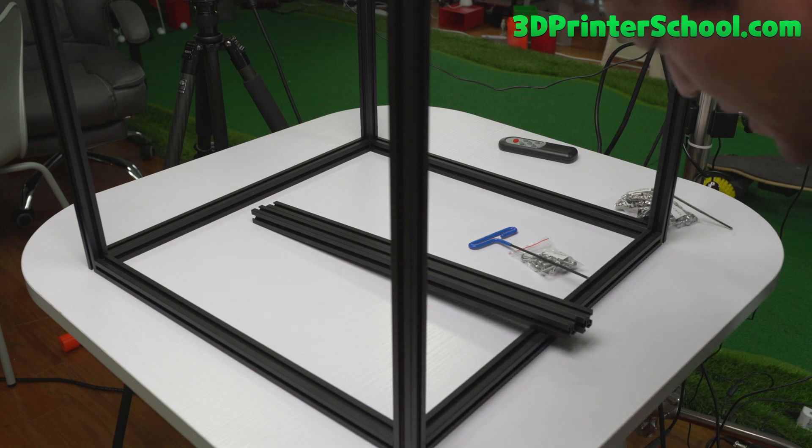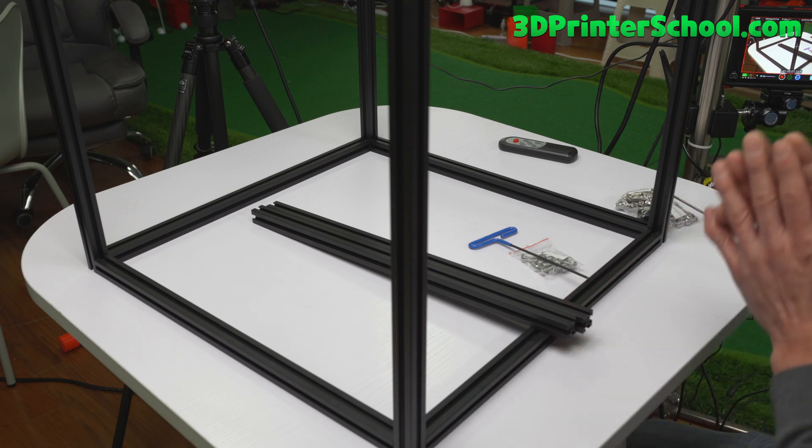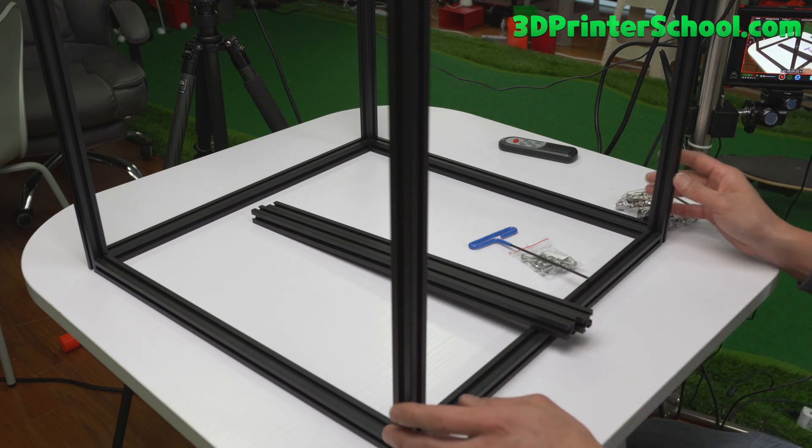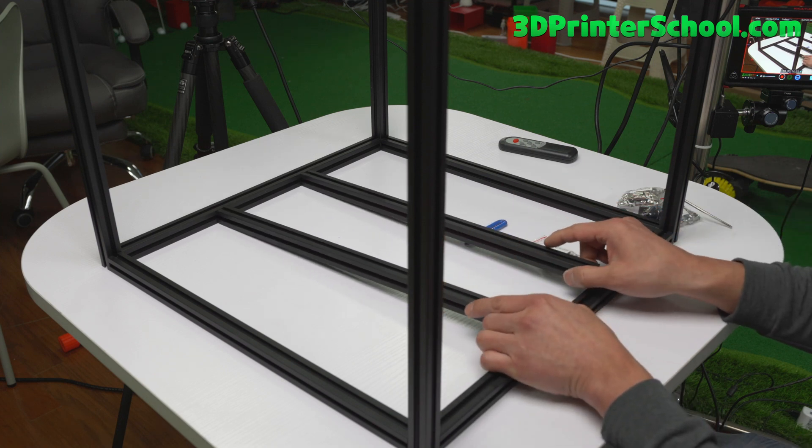Hi guys, welcome to 3dprinterschool.com. For this step 2, after you have built a completely square frame, we're going to go ahead and mount the bed part of it.